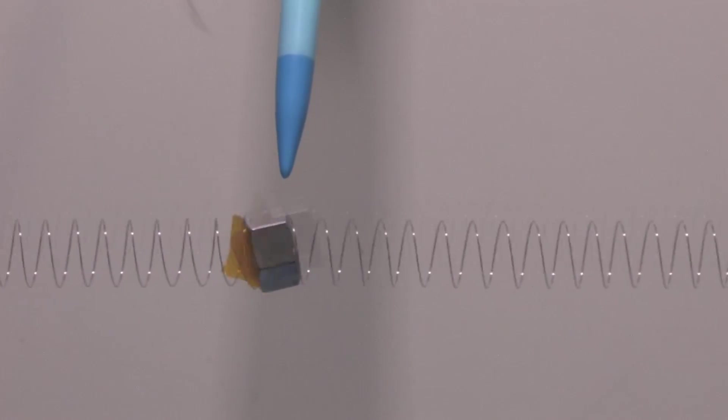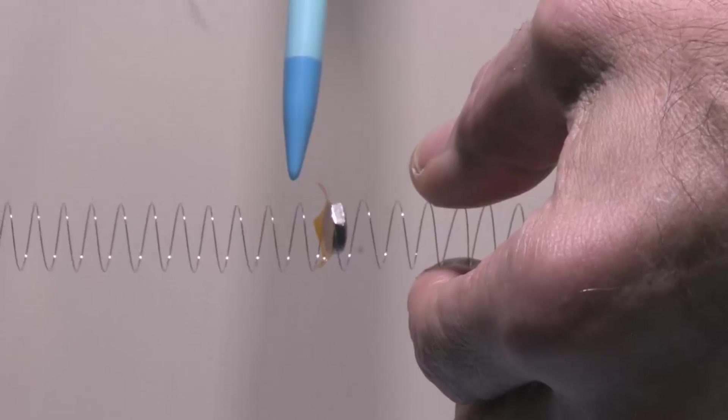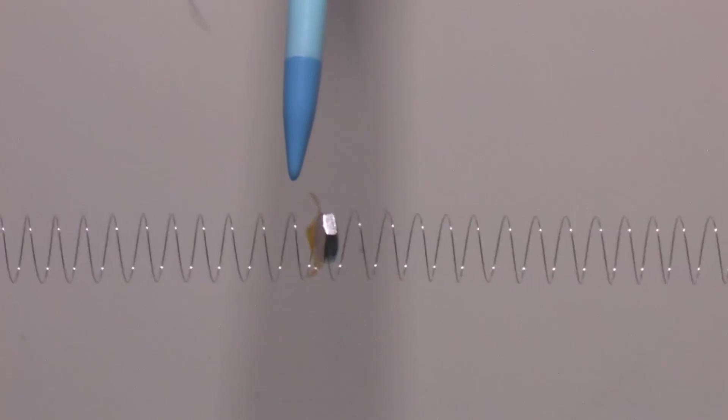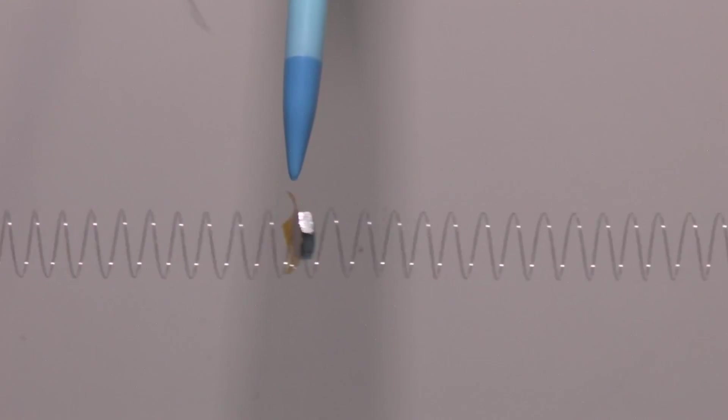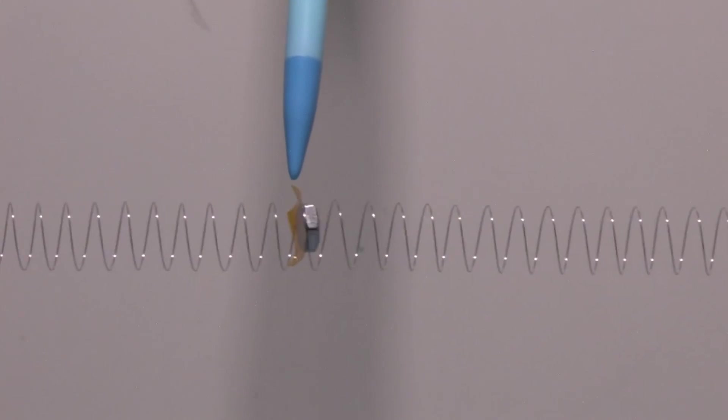Now we're going to put a different nut on here. This is a 10-32 nut. Look at that, it's oscillating at a higher frequency. This nut does not have as much mass and it's oscillating at a higher frequency. The period for this I measured was 10.7 seconds for 20 oscillations.